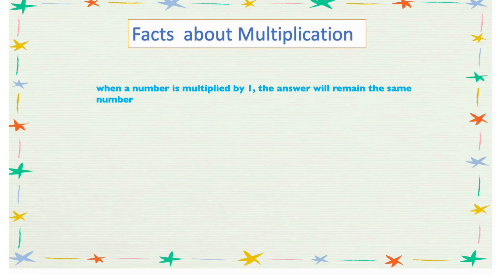There are some facts we need to know about multiplication. When a number is multiplied by 1, the answer remains the same number. For example: 4 times 1 is 4, 9 times 1 is 9, 20 times 1 is 20, and so on.